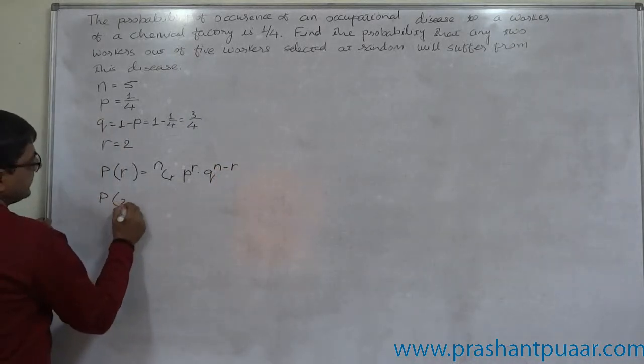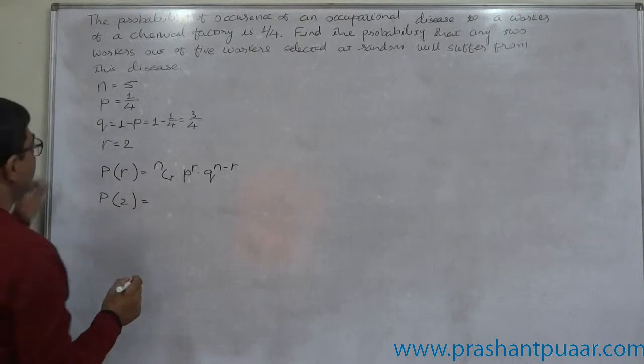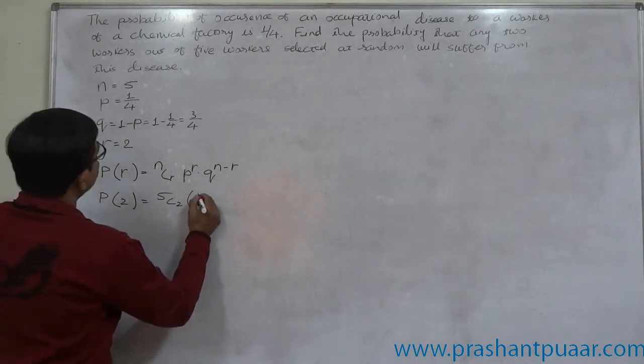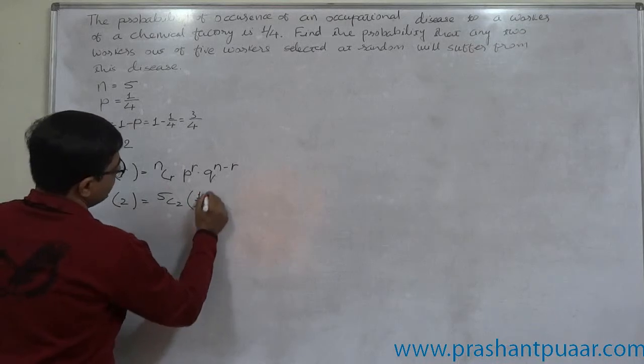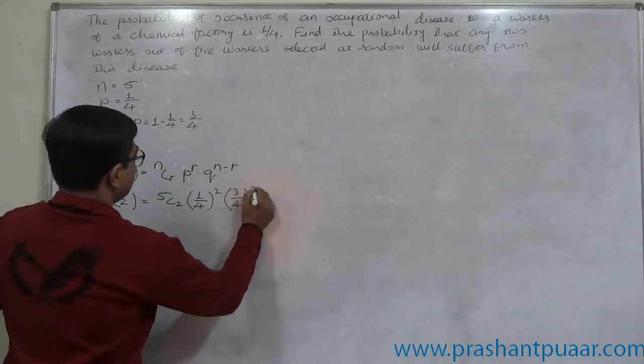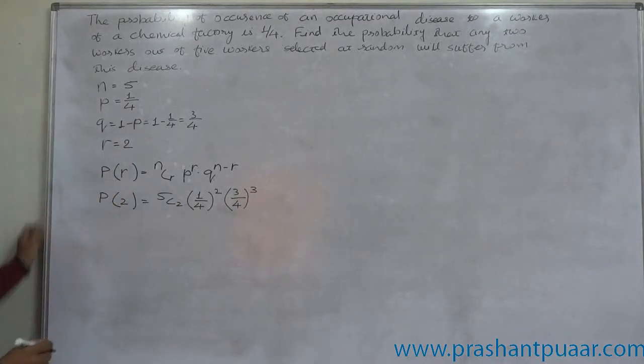Probability of exactly 2 successes out of 5 is 5C2 into 1 by 4 raised to 2 into 3 by 4 raised to 3.